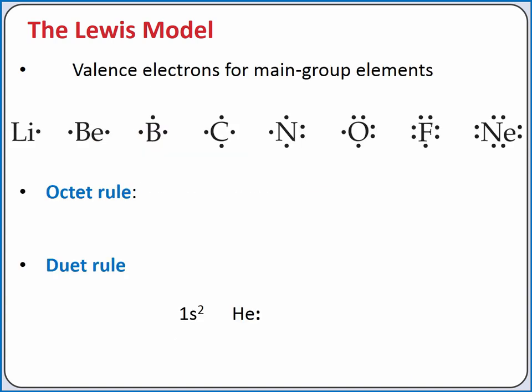For main group elements, the number of valence electrons is equal to the group number. For example, lithium is in group 1A, so it has one valence electron. Nitrogen is in group 5A, so it has five valence electrons.